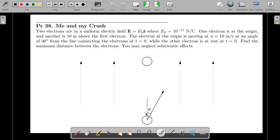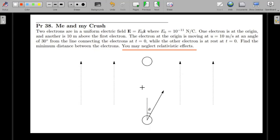The electron at the origin is moving with a speed of 10 meter per second at an angle of 30 degrees to the line joining the two initially, and the other electron is at rest at t = 0.